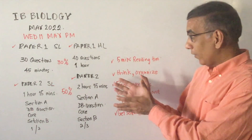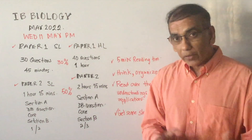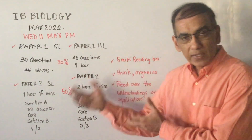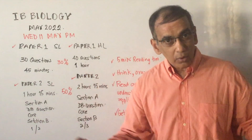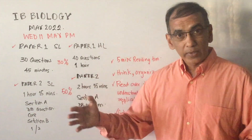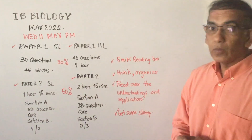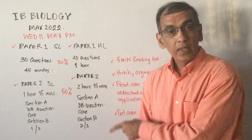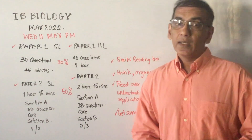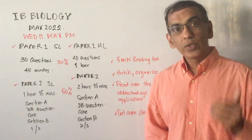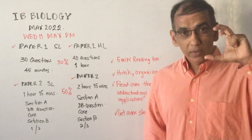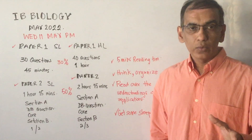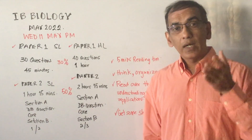For HL students, you have 2 hours and 15 minutes, and the structure is very much the same. You begin with a data-based question, and the rest of Section A covers all of your syllabus including core topics 1 to 6 and the AHL section, topics 7 to 11. Then you'll have to do 2 questions out of 3 in Section B. It's important to reflect carefully — don't choose a question just because you can do well on part A. Look at all three parts and decide, then reflect on how you would lay out your answer.